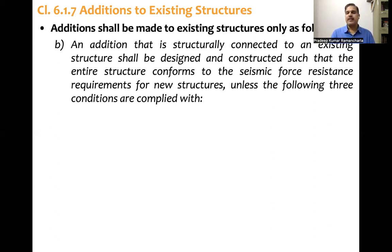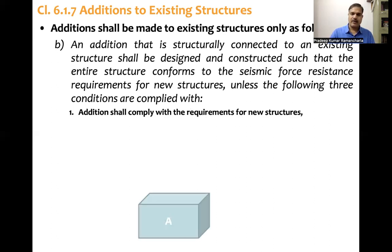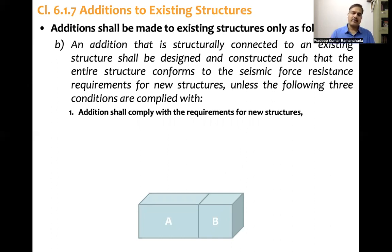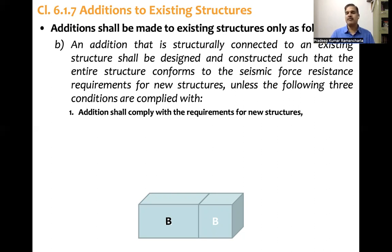If the addition is structurally connected, what the code says is straightforward. A is the old structure and B is the new structure, structurally connected. When B is structurally connected to the old structure, the code says A also should conform to the requirements of the new structure — that is, A should satisfy the design requirements of B.